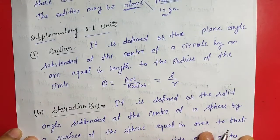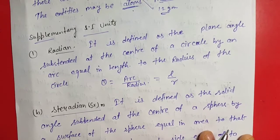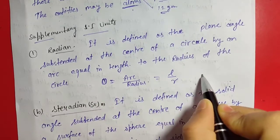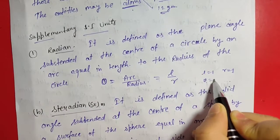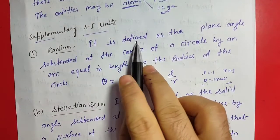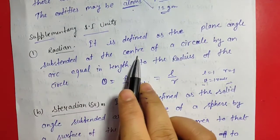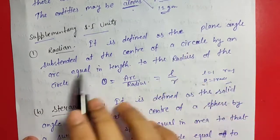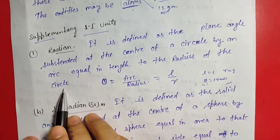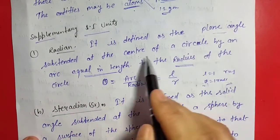Now the supplementary units. There are two supplementary units. The first is radian, which is a unit of plane angle. We know that theta equals arc divided by radius. If arc length l equals radius r, then theta equals 1 radian. Radian is defined as the plane angle subtended at the center of a circle by an arc equal in length to the radius of the circle.